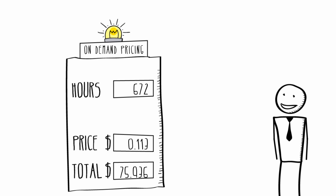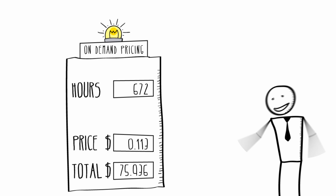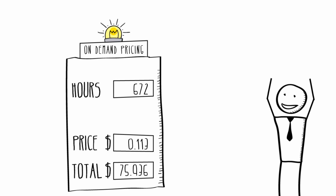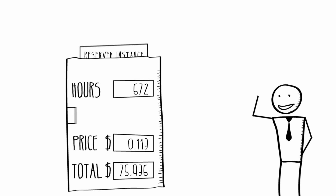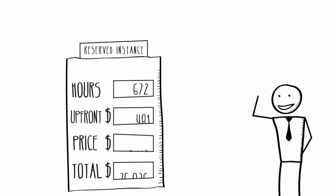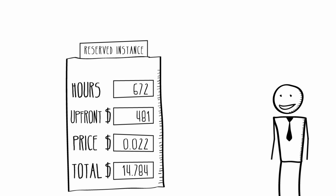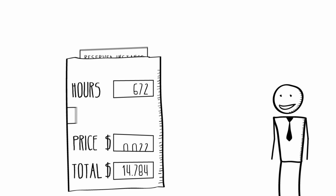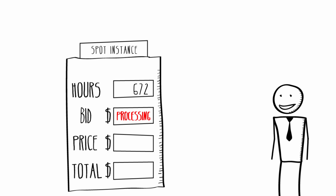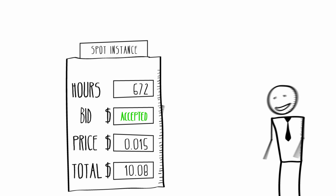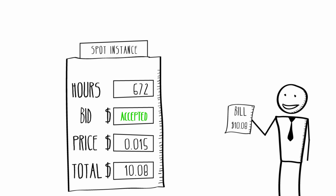Amazon EMR is low cost and provides a range of pricing options, including hourly on-demand pricing, the ability to reserve capacity for a lower hourly rate, or name your own price for the resources you need with Spot instances. When you are using Amazon EMR, you pay only for the resources that you use.